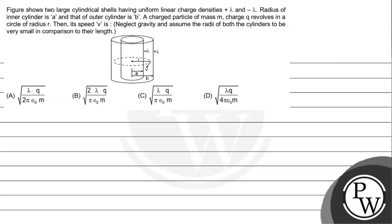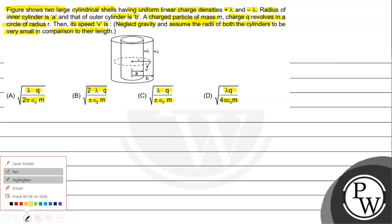The question shows two large cylindrical cells having uniform linear charge densities plus lambda and minus lambda. The radius of the inner cylinder is a and that of the outer cylinder is ba. A charged particle of mass m and charge q revolves in a circle of radius r. Find its speed v. Neglect gravity and assume the radii of both cylinders are very small in comparison to their length. The options are: (A) √(λq / 2πε₀m), (B) √(2λq / πε₀m), (C) √(λq / 5ε₀m), (D) √(λq / 4πε₀m).